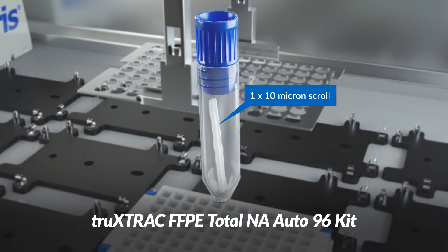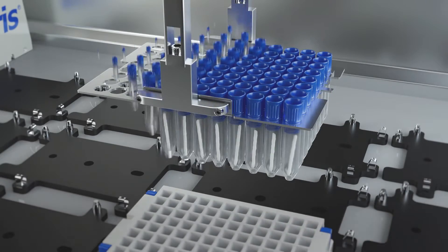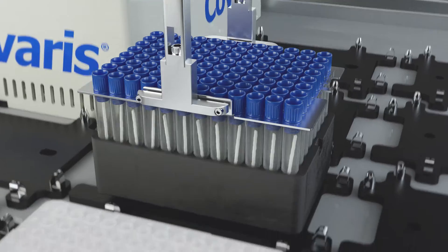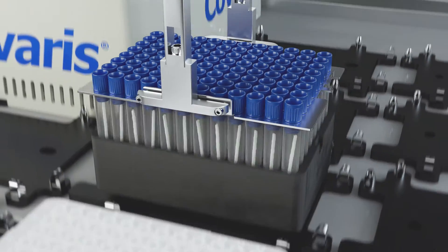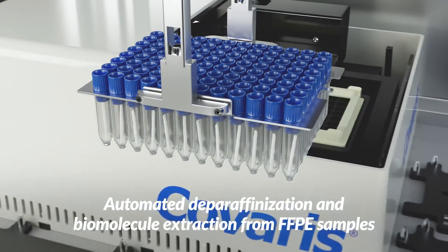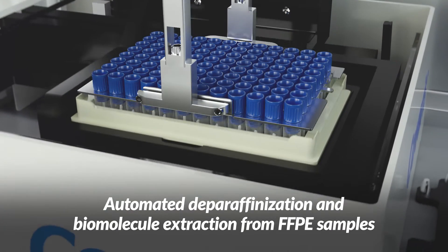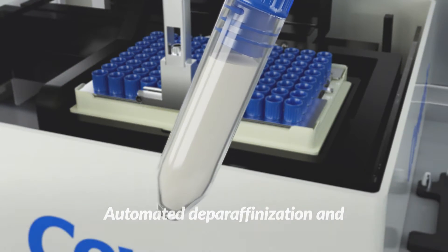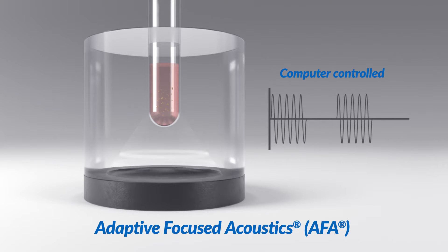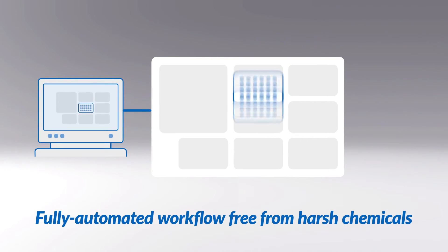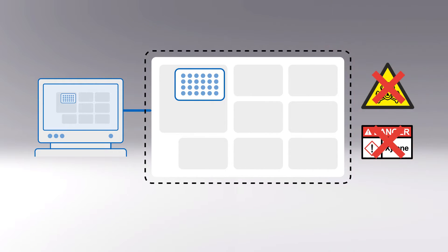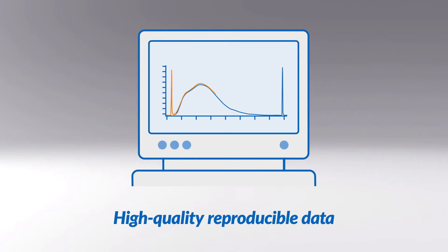Introducing the Truextract FFPE Total Nucleic Acid Auto 96 Kit from Kovaris. Now you can automate deparaphonization and biomolecule extraction from FFPE samples, enabled by Kovaris AFA technology. Enjoy a fully automated workflow without exposure to volatile and harsh chemicals. Generate precise, high-quality data efficiently and reproducibly.